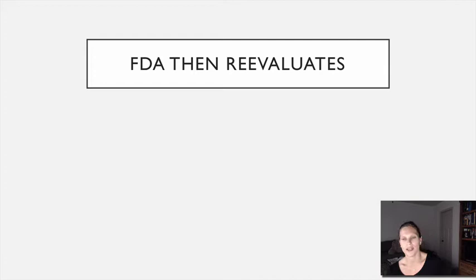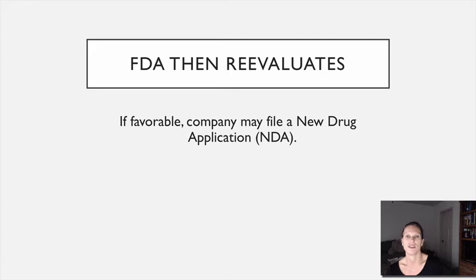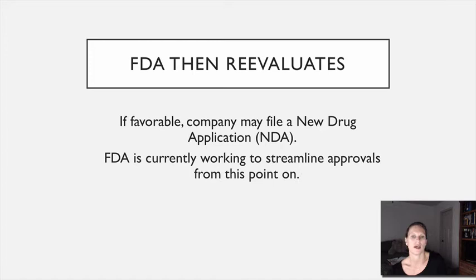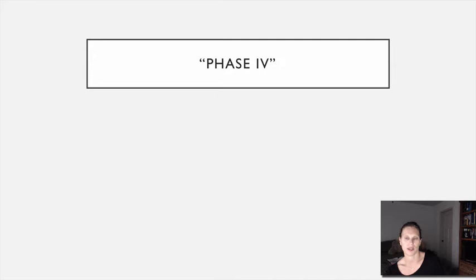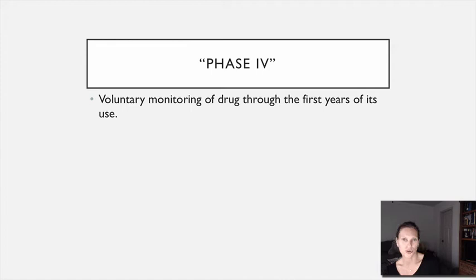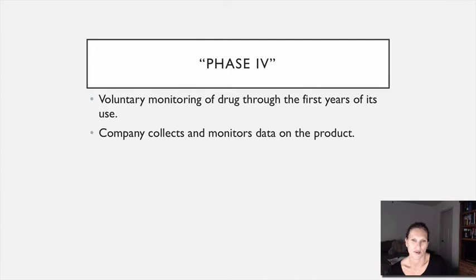At the end of Phase 3, the drug company takes all that information, submits it to the FDA, and the FDA re-evaluates all the data. If favorable, the company files a New Drug Application, which then goes through New Drug Approval before the drug comes to market. Some recent drug legislation tries to streamline this process and fast-track it, especially for drugs that are really relevant and needed. Phase 4 — post-marketing surveillance — occurs after the drug is being sold and marketed.